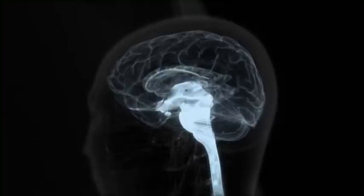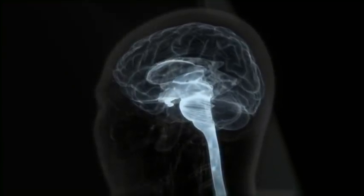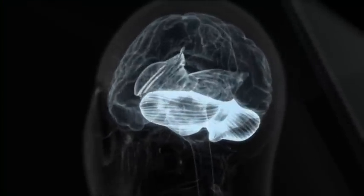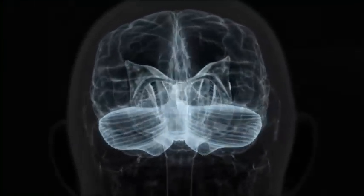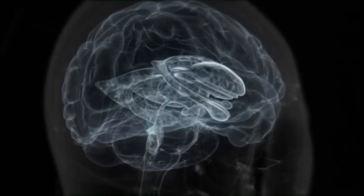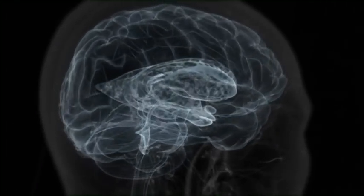The brainstem regulates vital bodily functions like breathing and heart rate. The cerebellum coordinates all motoric routines like walking or grasping. And the limbic system knows us better than we know ourselves because it regulates everything that we feel.